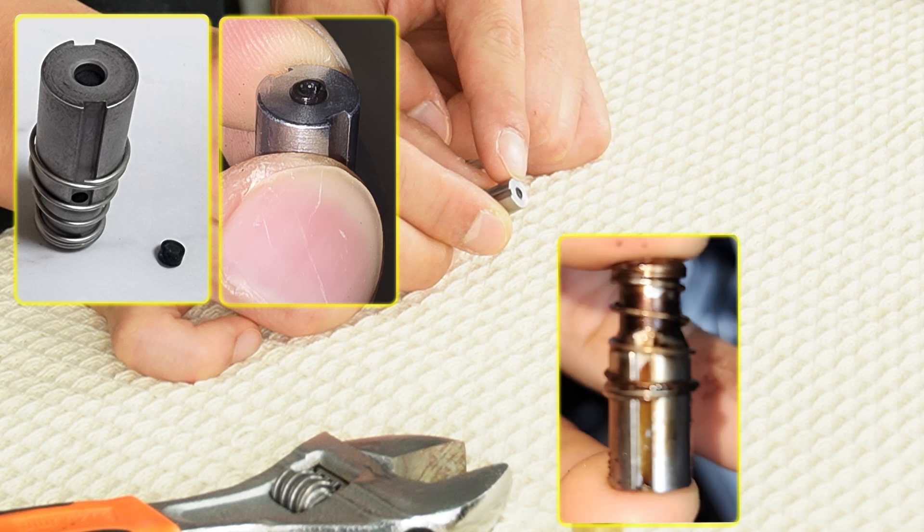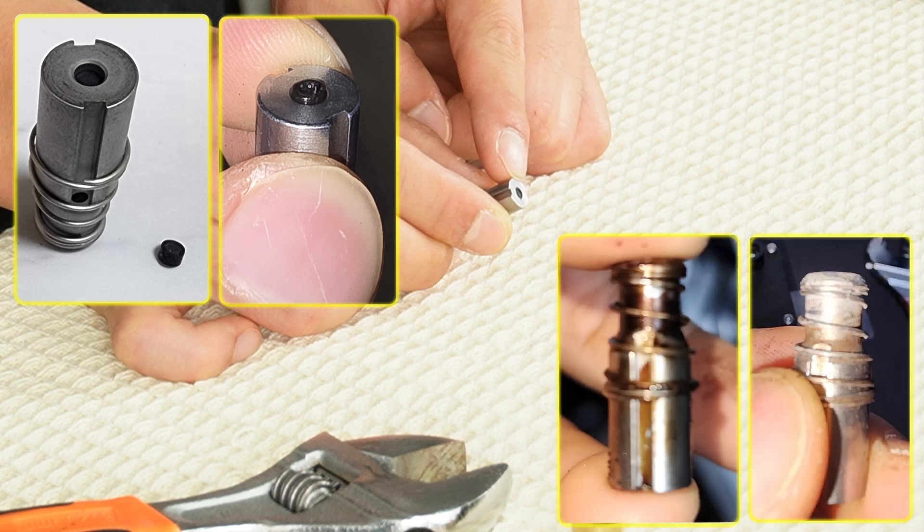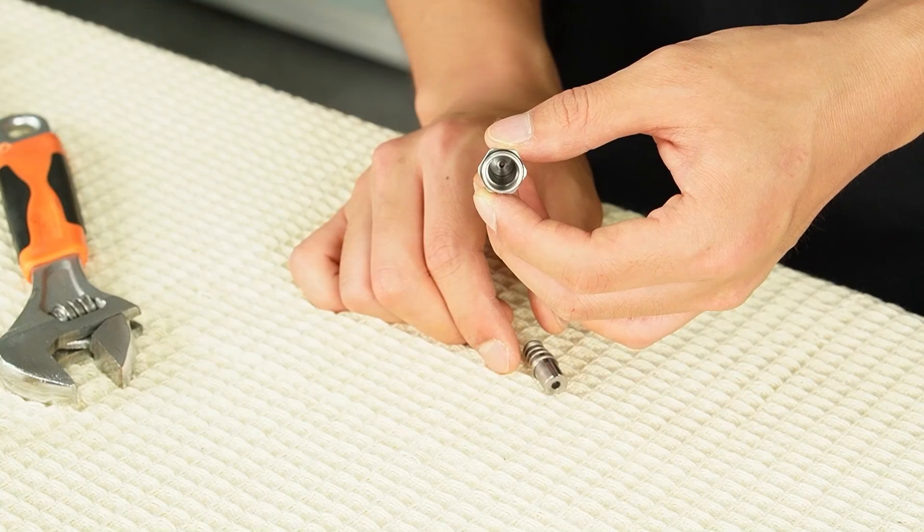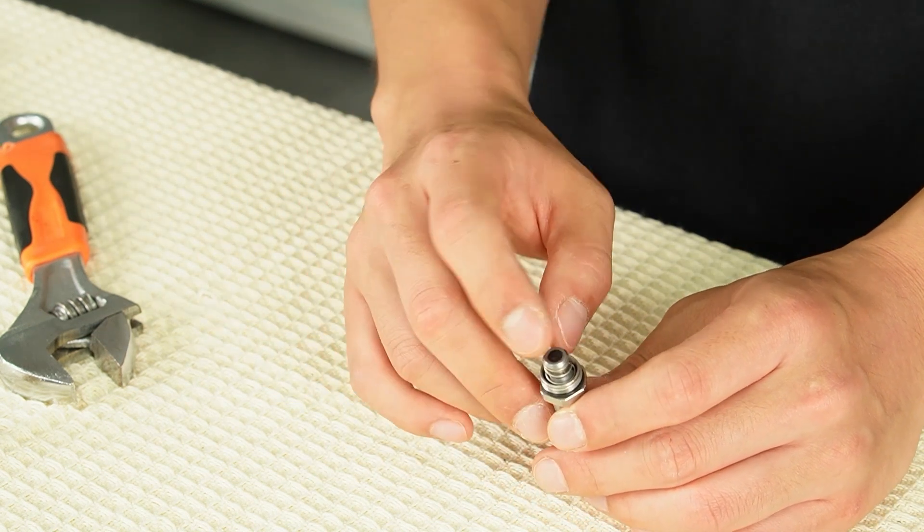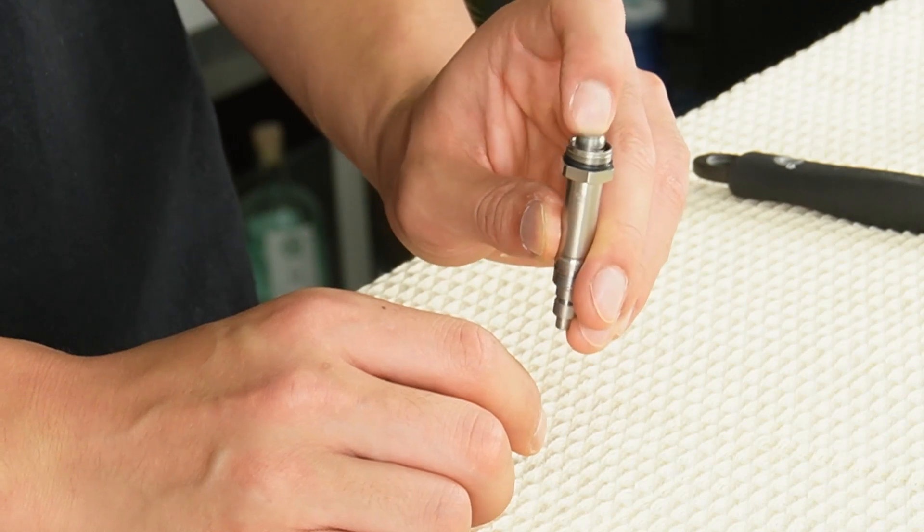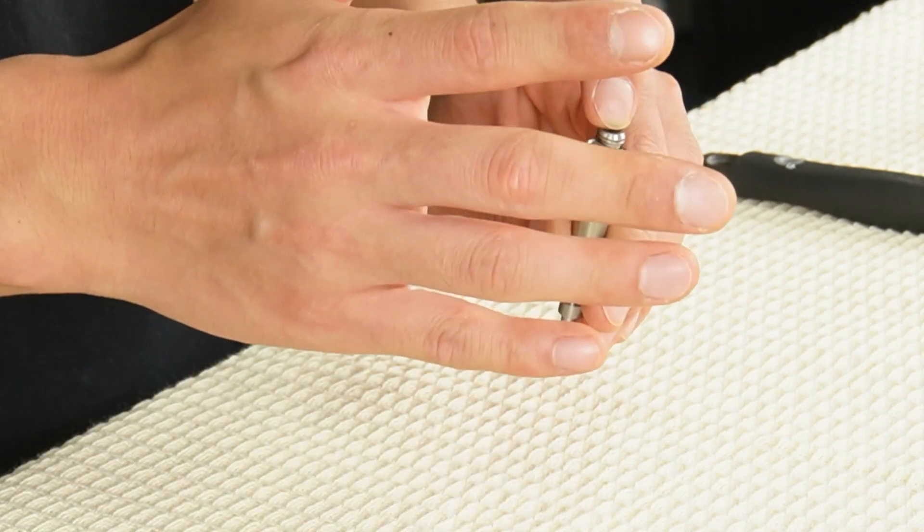If it's dirty or has scale buildup, you just need to clean it. Bring the valve body to the sink and rinse it under running water. Reinsert the plunger into the valve body and make sure the spring compresses and rebounds smoothly.